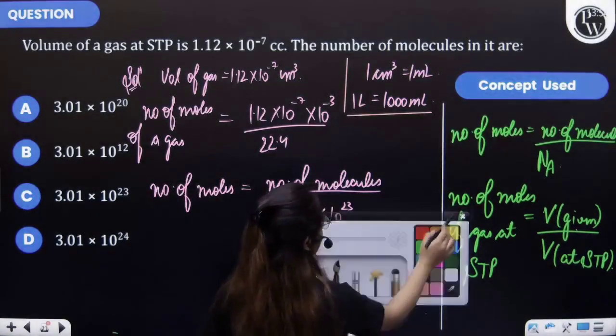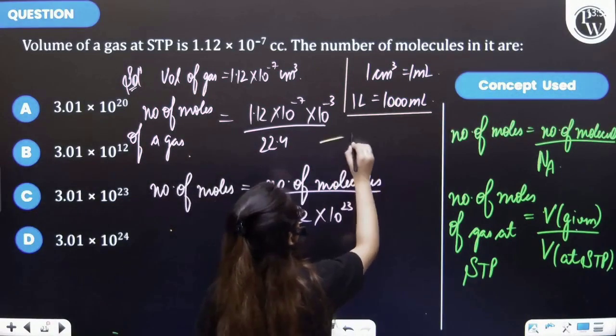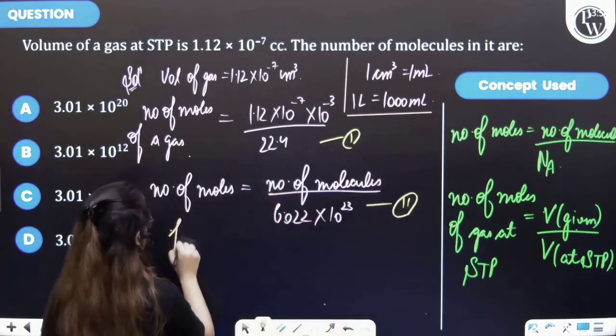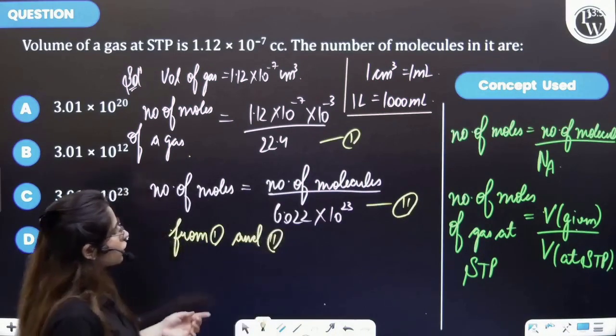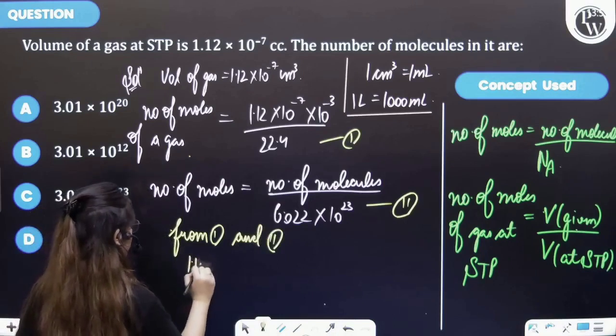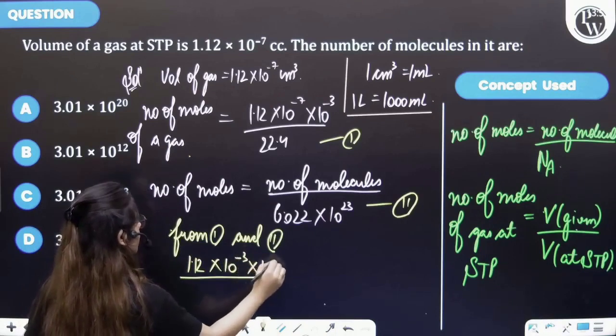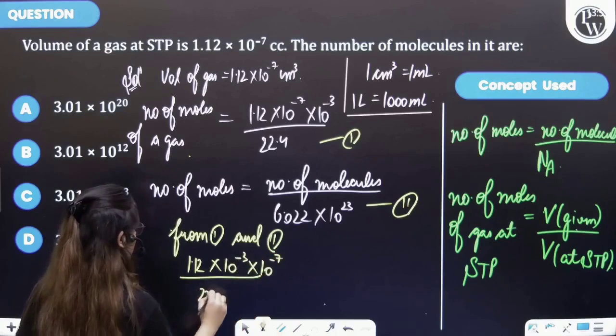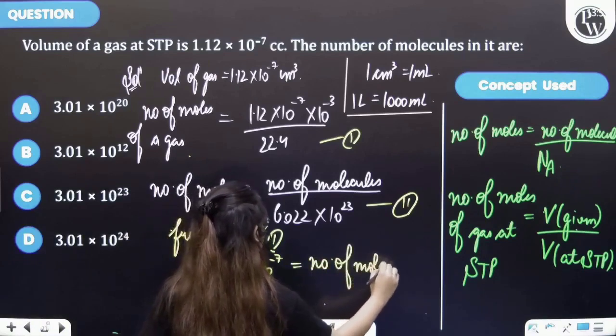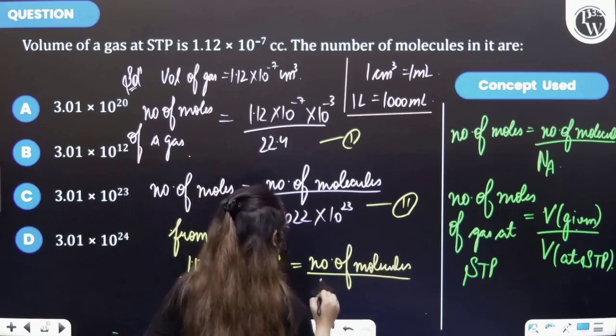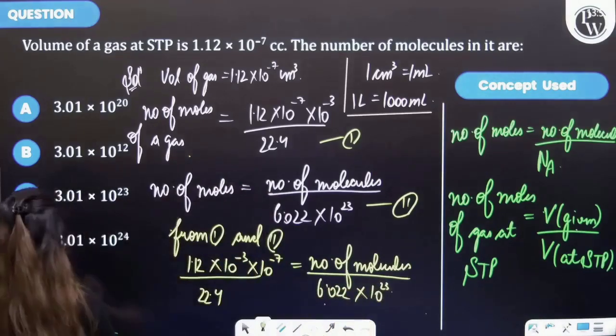Now you will observe one thing, that this is also number of moles and this is also number of moles. So let's equate these two equations. From first and second, you will be getting, and so the number of molecules will be equal to...